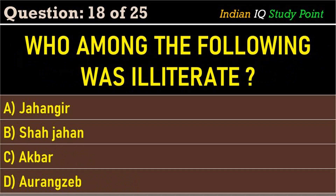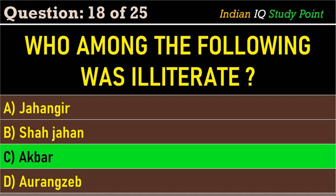Coming to the next question: who among the following was illiterate? Option A. Jahangir, B. Shah Jahan, C. Akbar, D. Aurangzeb. And the correct answer is Option C. Akbar.